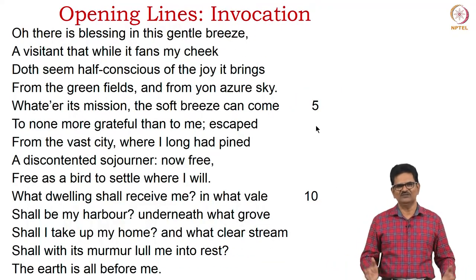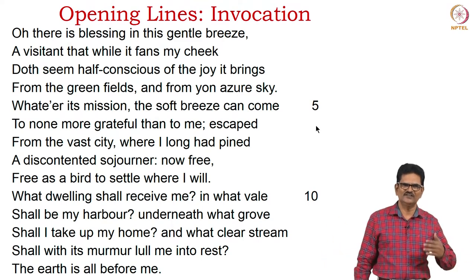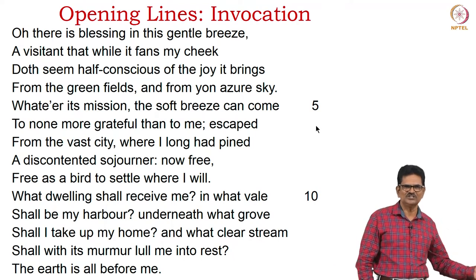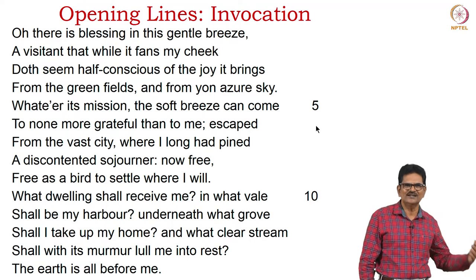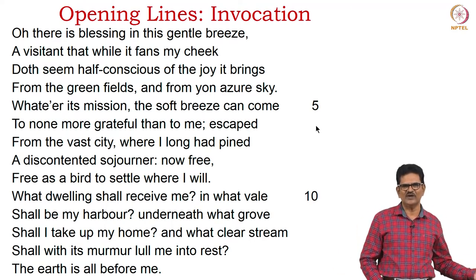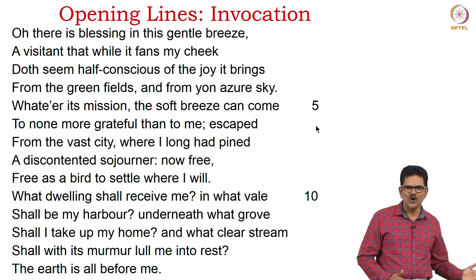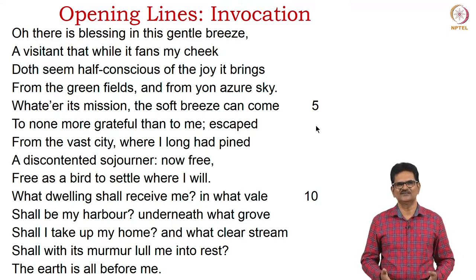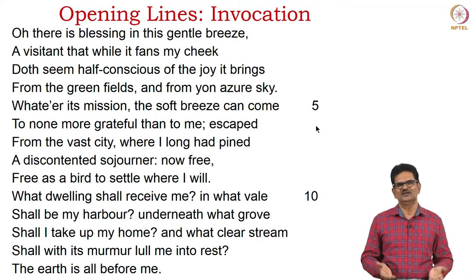We have the opening lines of The Prelude. This is an autobiographical epic poem, so it begins with an invocation: 'Oh, there is a blessing in this gentle breeze, a visitant that while it fans my cheek doth seem half-conscious of the joy it brings from the green fields and from yon azure sky. Whatever its mission, the soft breeze can come to none more grateful than to me, escaped from the vast city where I long had pined, yet discontented sojourner — now free, free as a bird to settle where I will. What dwelling shall receive me? In what vale shall be my arbour underneath? What grove shall I take up my home? And what clear stream shall with its murmur lull me into rest? The earth is all before me.'